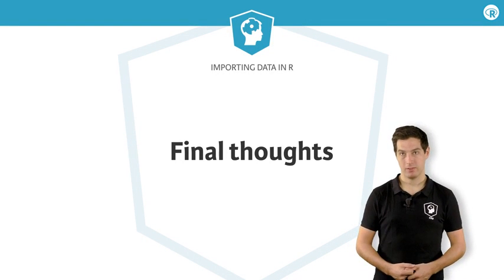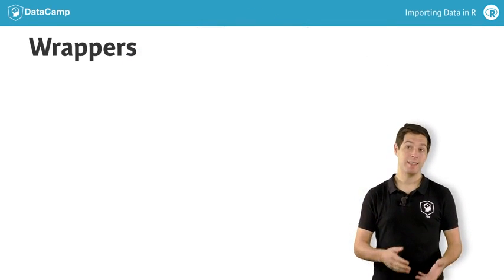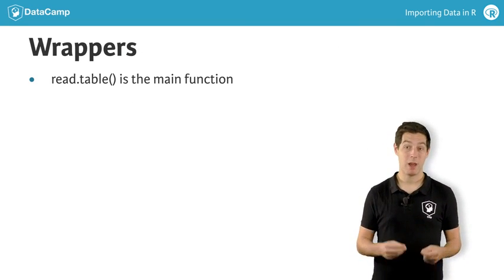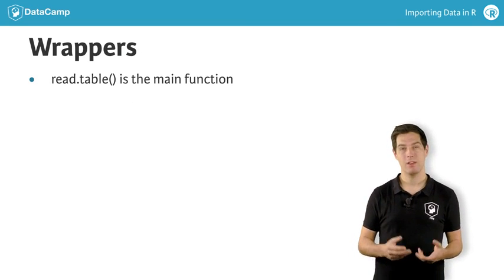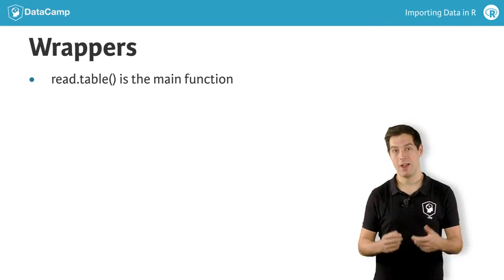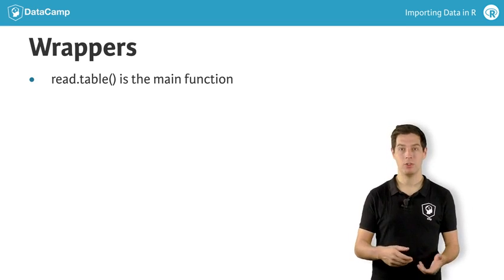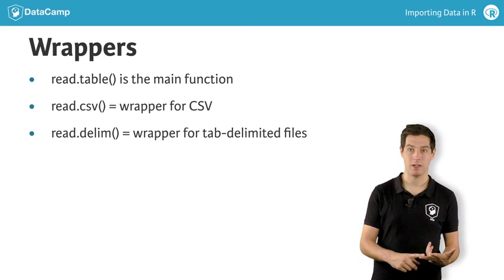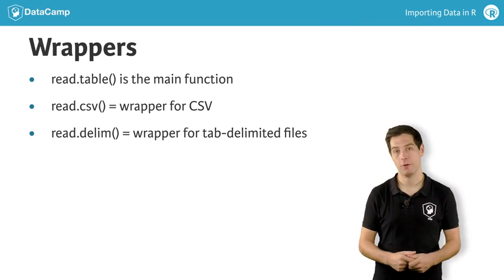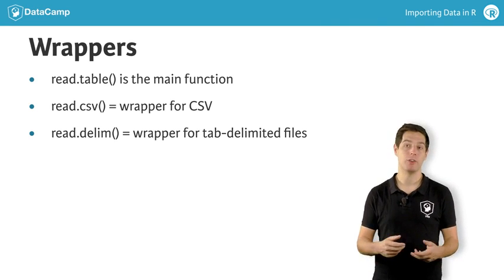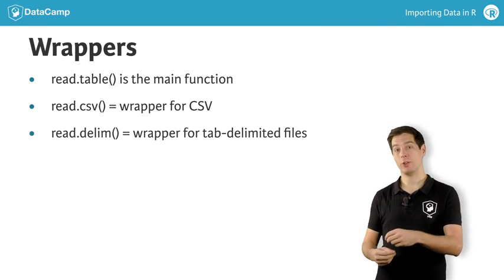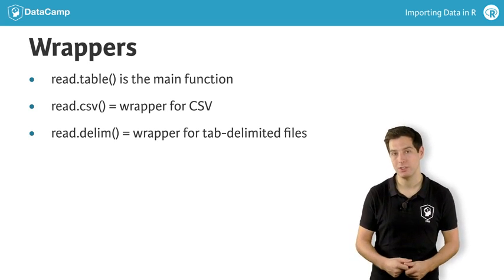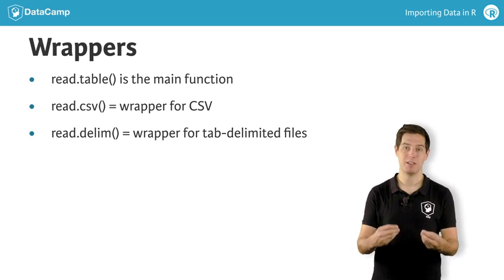There's something I haven't told you yet. When I said that read.table was R's main importing function, I was serious. Actually, read.csv and read.delim — the functions to import comma-separated values and tab-delimited files — are so-called wrapper functions around read.table. They call read.table behind the scenes, but with different default arguments to match the specific formats.